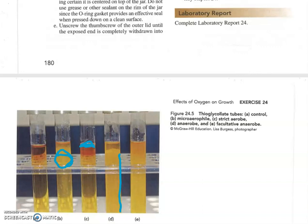And then test tube number E shows facultative anaerobes. They can grow either way. They grow all the way through the entire length of this test tube. They grow with oxygen, with little oxygen, with no oxygen. It doesn't matter to them. They can grow either way.